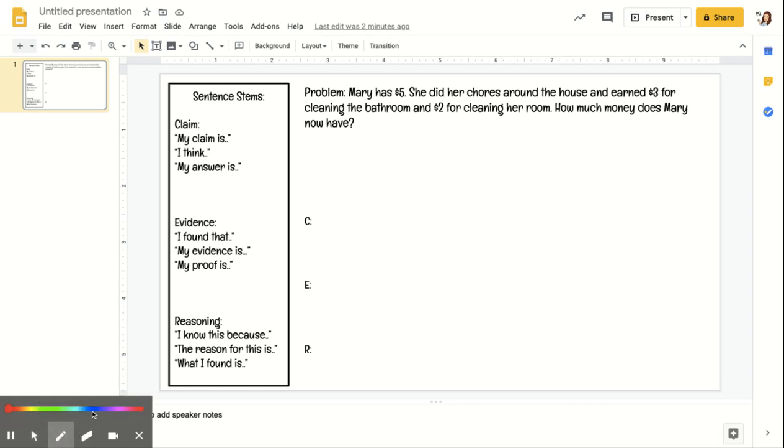We would first want to look at the question, which is how much money does Mary now have. So we know that's what we're solving for. If I was a student, I know that I should be adding. So I would write my $5 plus my $3 plus my $2.